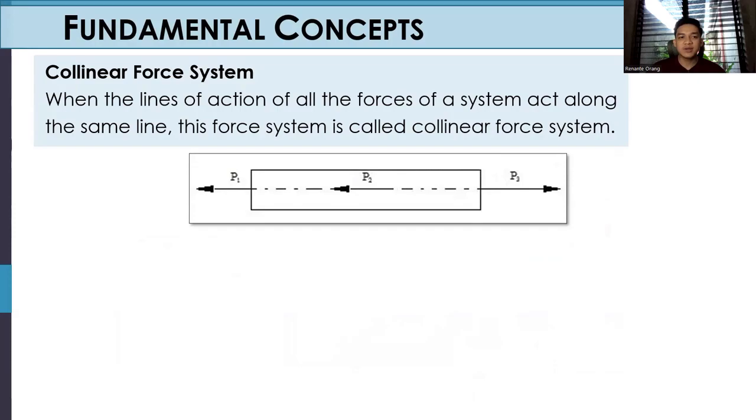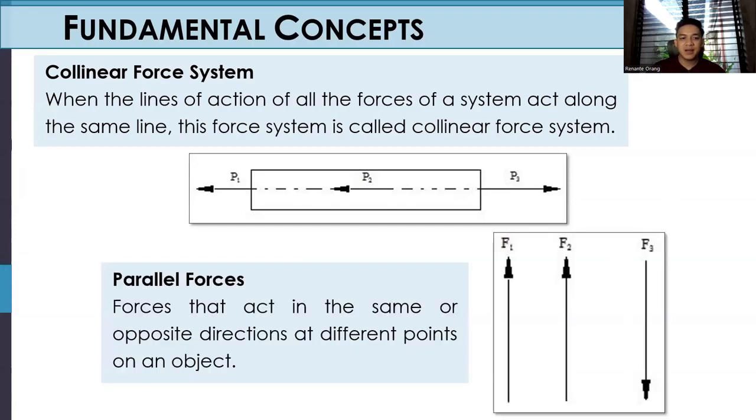First is collinear force system. When the lines of action of all the forces of a system acts along the same line, this force system is called collinear force system. As you can see in the figure, our forces act in only one axis. Next is parallel forces: forces that act in the same or opposite directions at different points on an object. Parallel lines are lines that do not intersect or has the same slope.